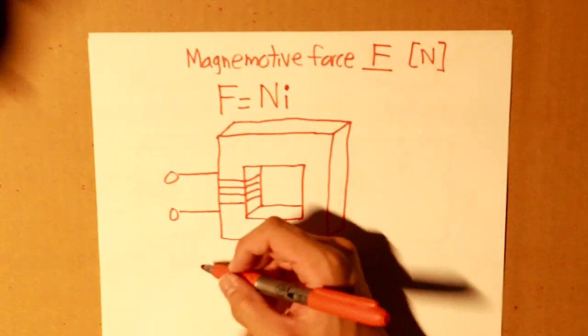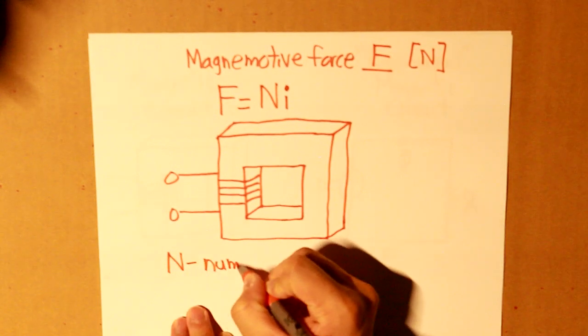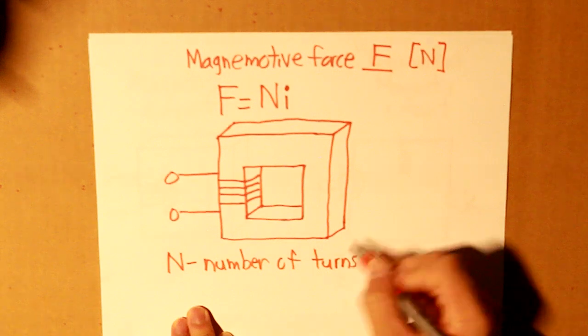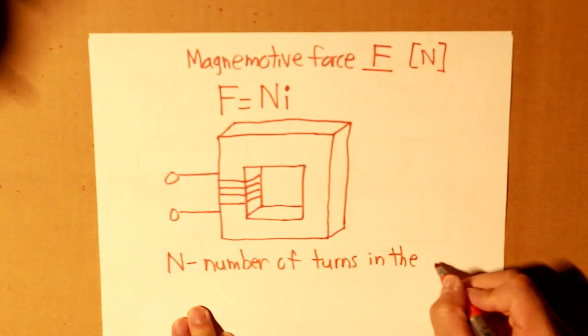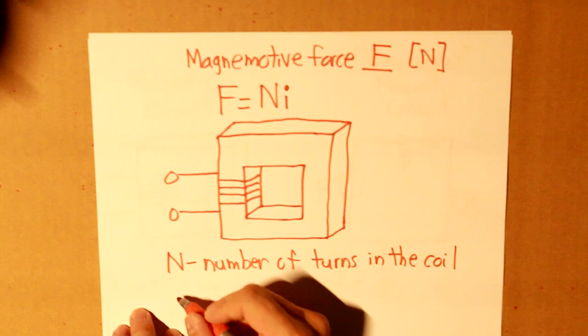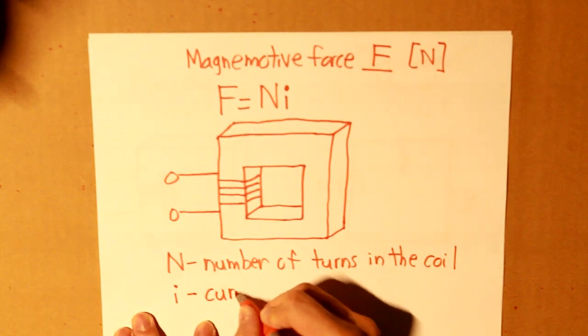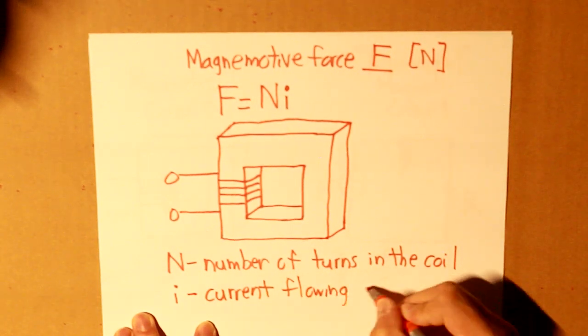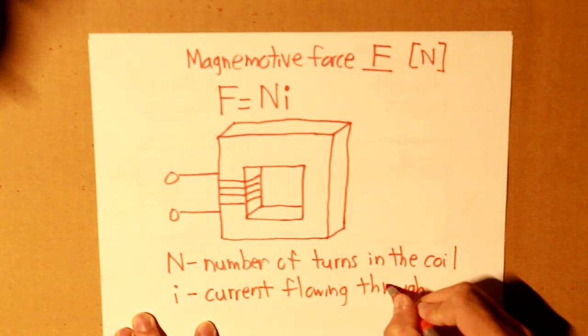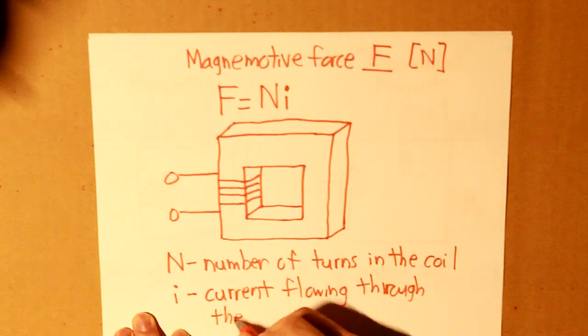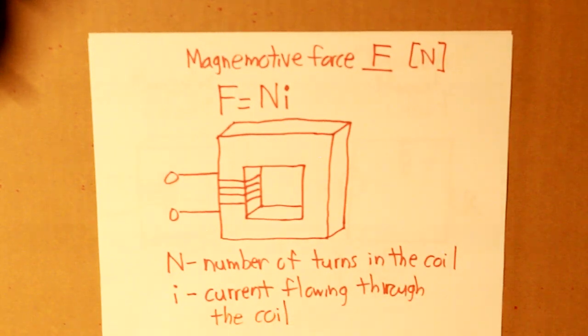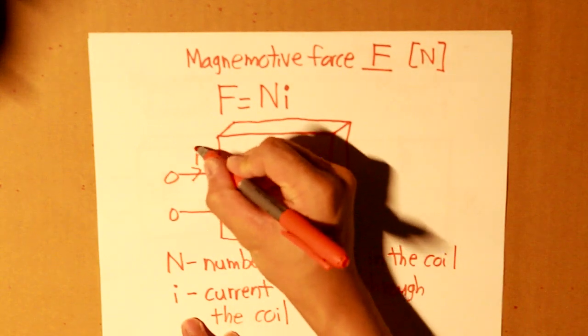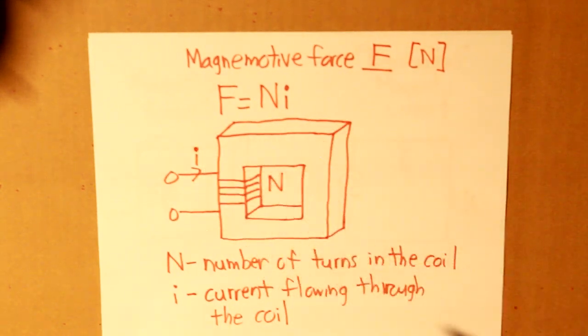where N is the number of turns in the coil, and I is the current flowing through the coil. And I'm just going to draw where these symbols are going to be, and that is our magnetomotive force.